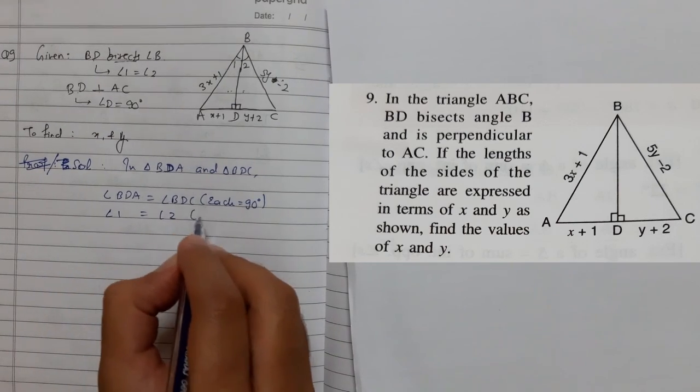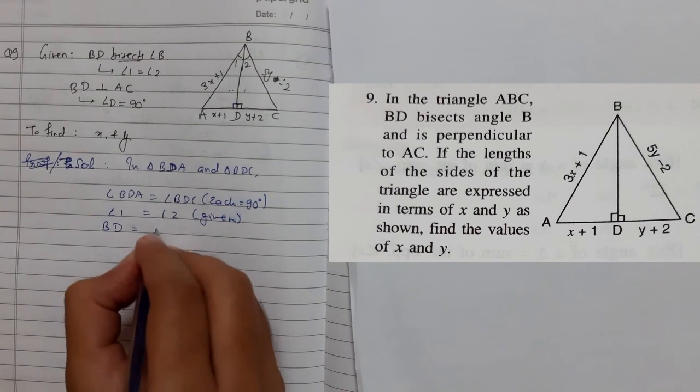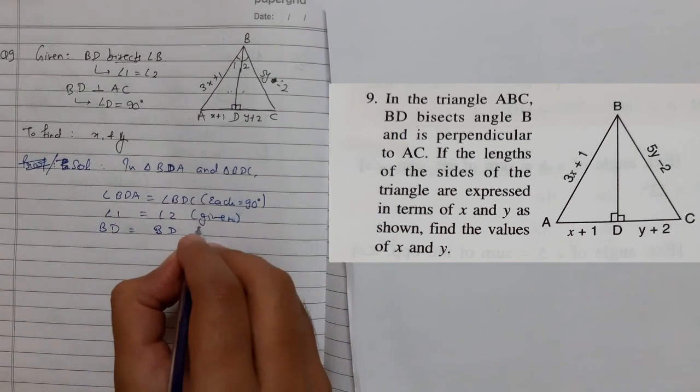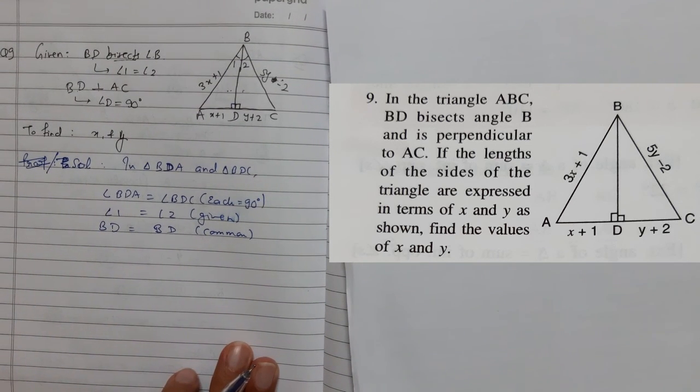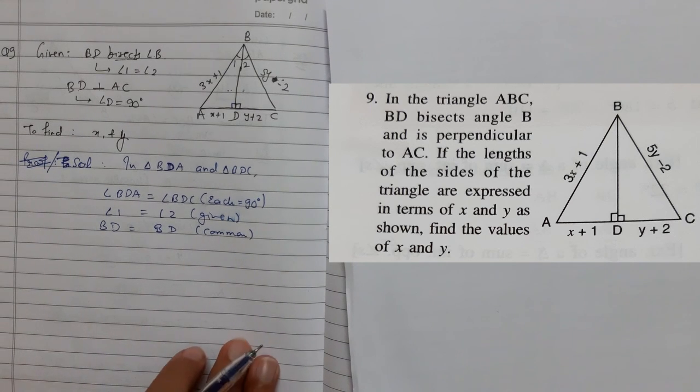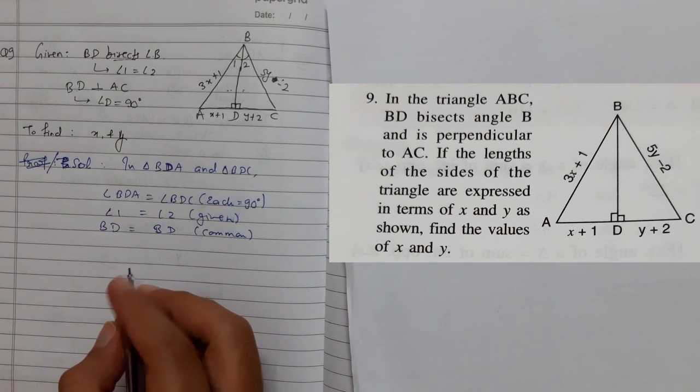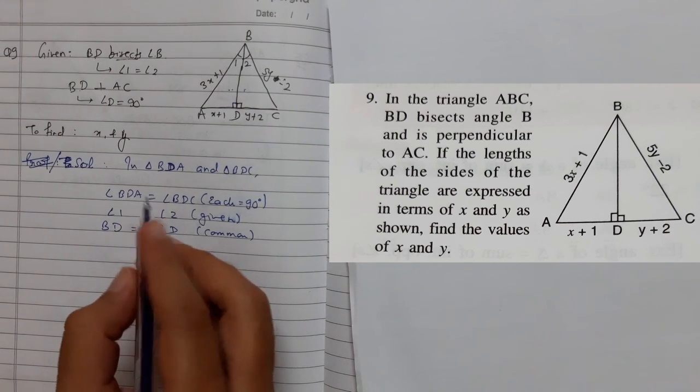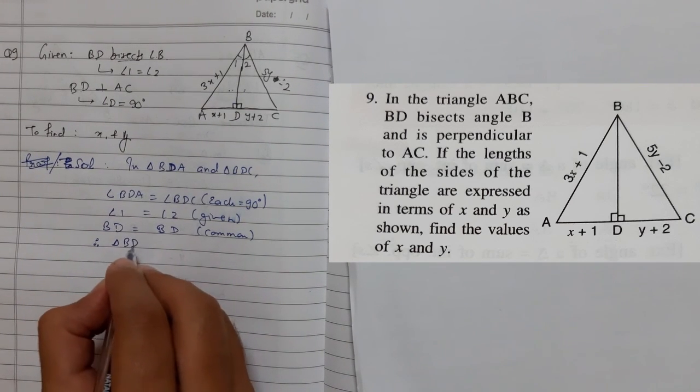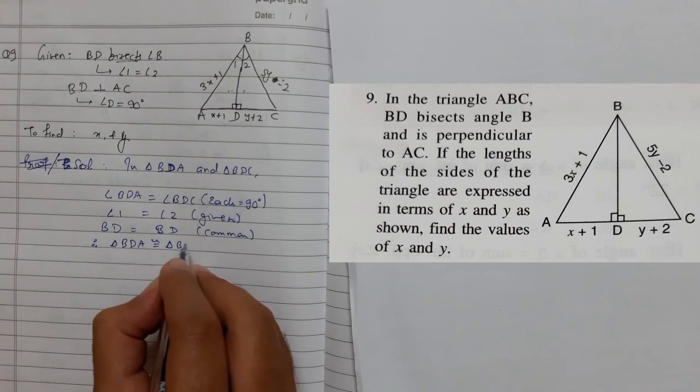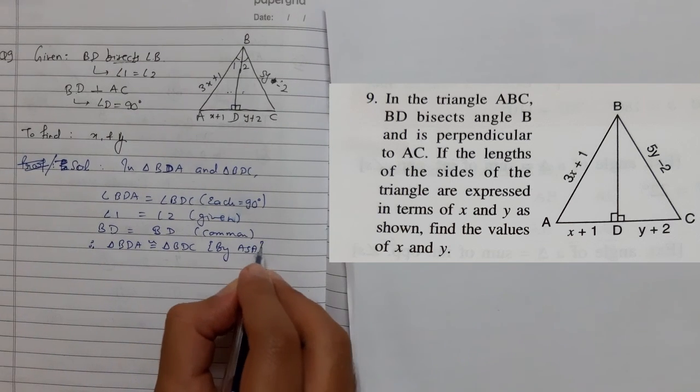Angle 1 equals angle 2, which is also given. Third thing is BD equals BD, which is common. I am running through this thing because we have already discussed this many times. So watch previous videos if you want to understand in detail how to do congruency. Now which property? Angle side angle. Therefore, triangle BDA is congruent to triangle BDC by angle side angle congruency criteria.